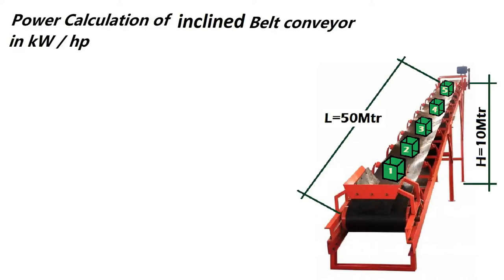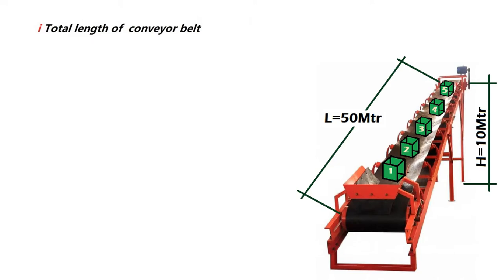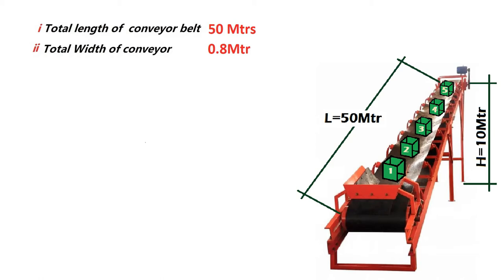Hello guys, today we will estimate the power calculation for an incline belt conveyor. For the calculation we need some data: the total length of the conveyor belt is 50 meters, total width of the belt is 0.8 meters, and the total thickness of the belt is 0.014 meters.